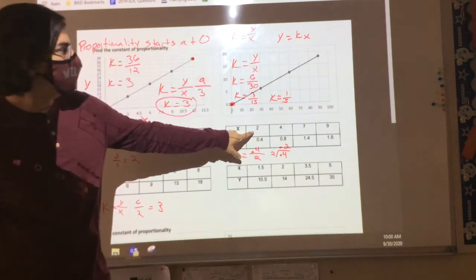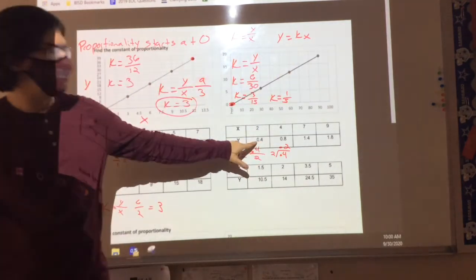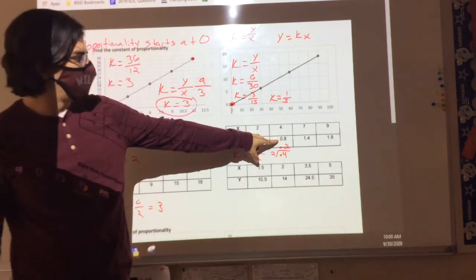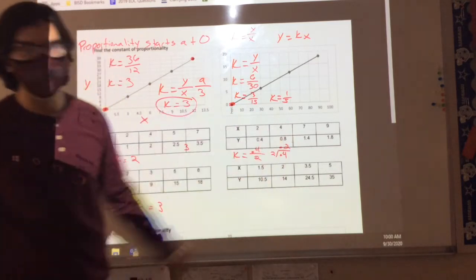Yeah. Well, if I do 2 times 0.2, I get 0.4. If I do 4 times 0.2, I get 0.8. If I do 7 times 0.2, I get 1.4.